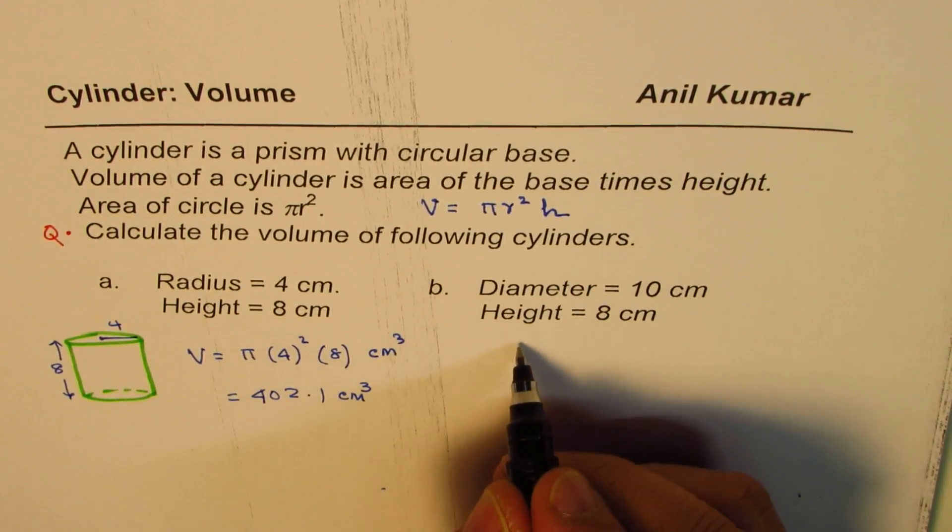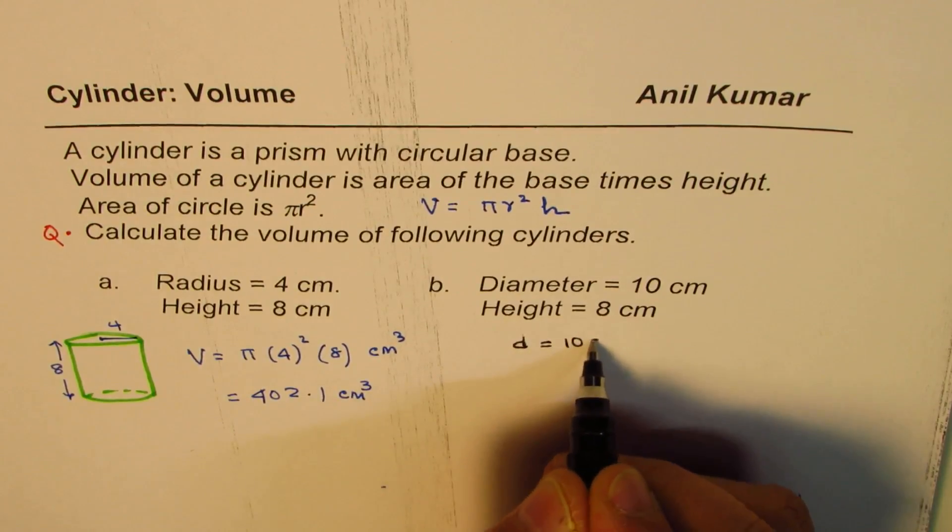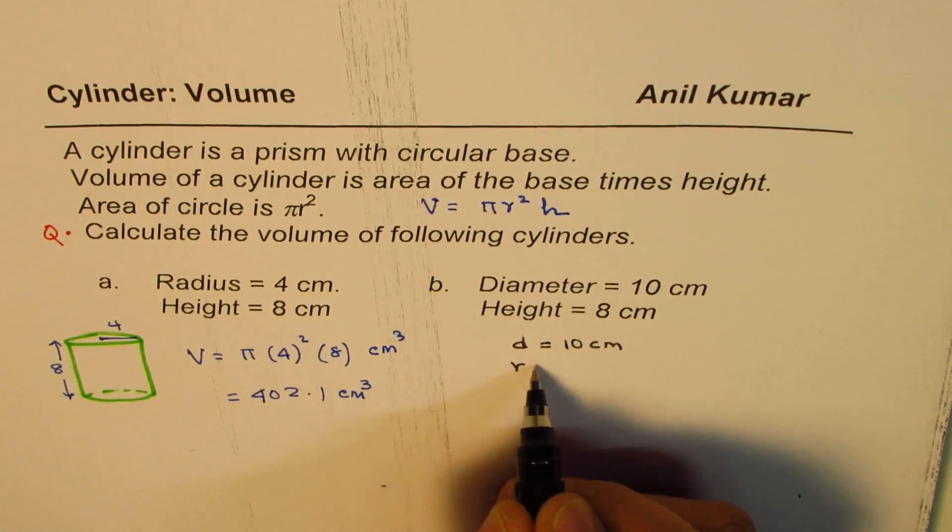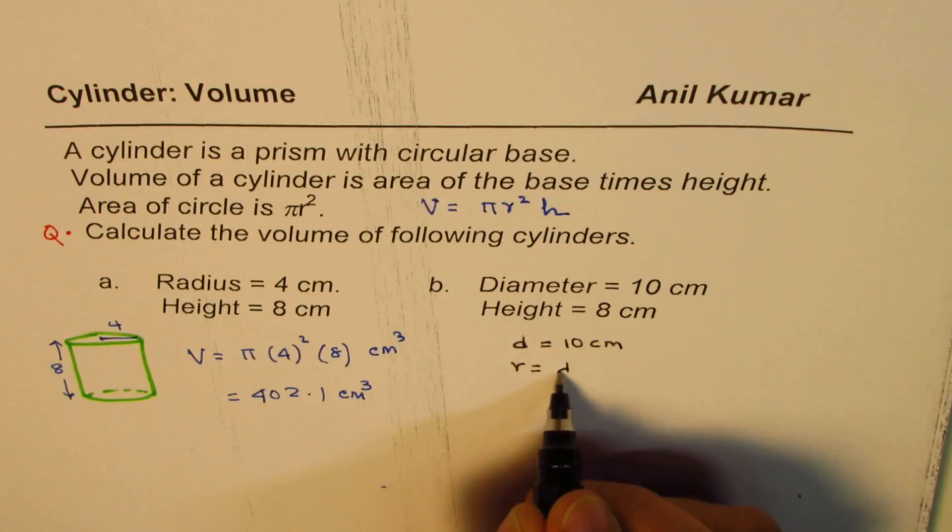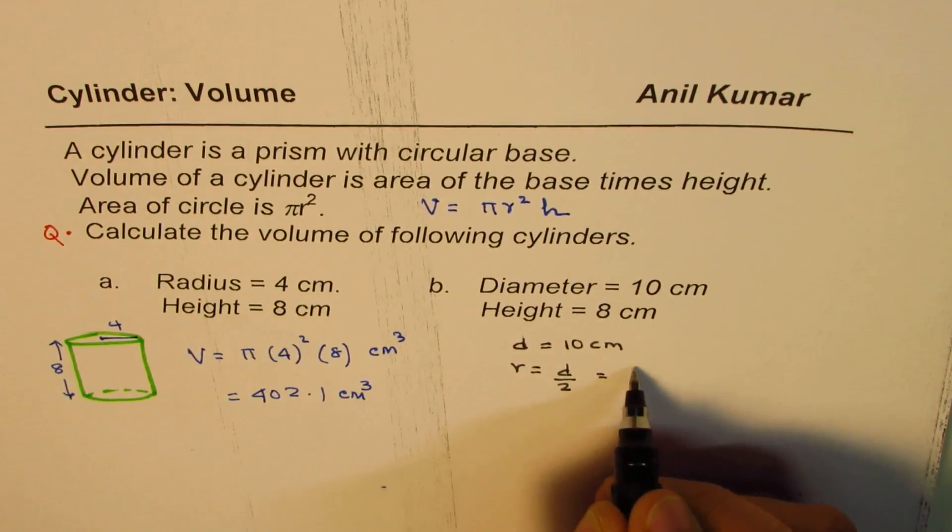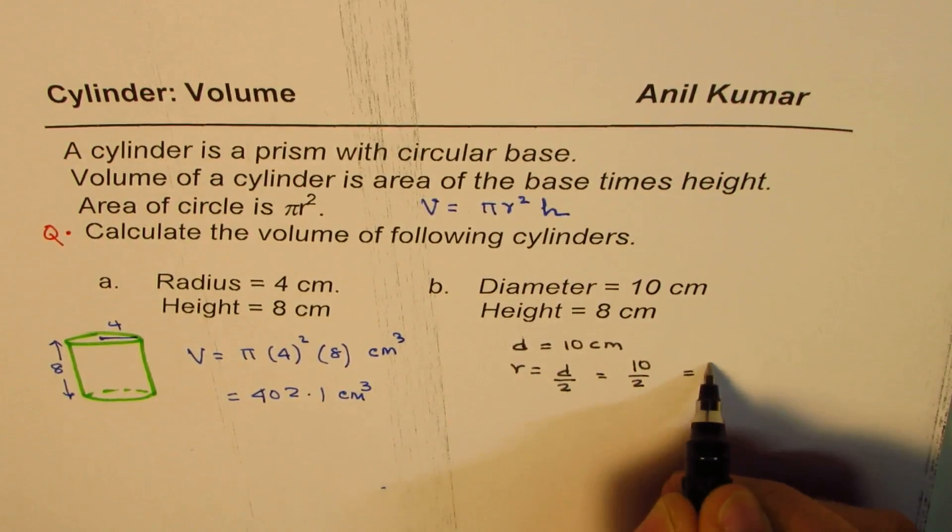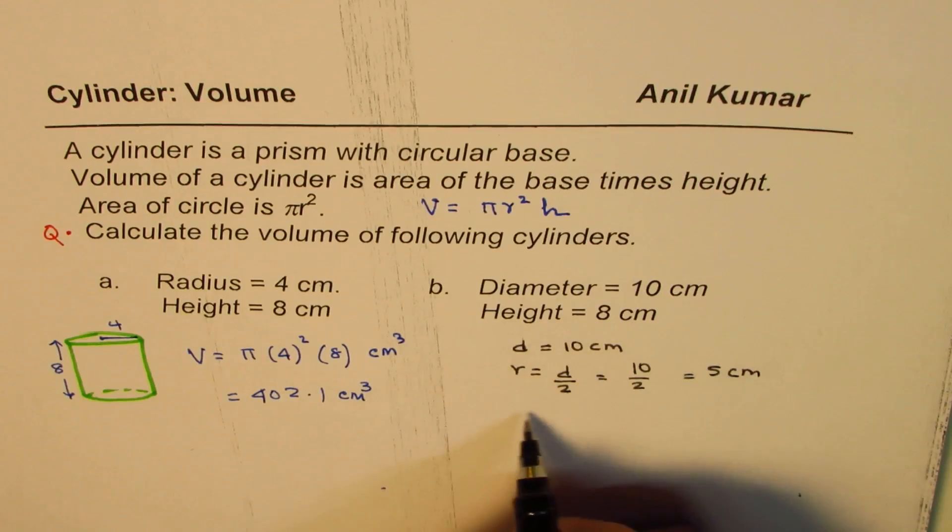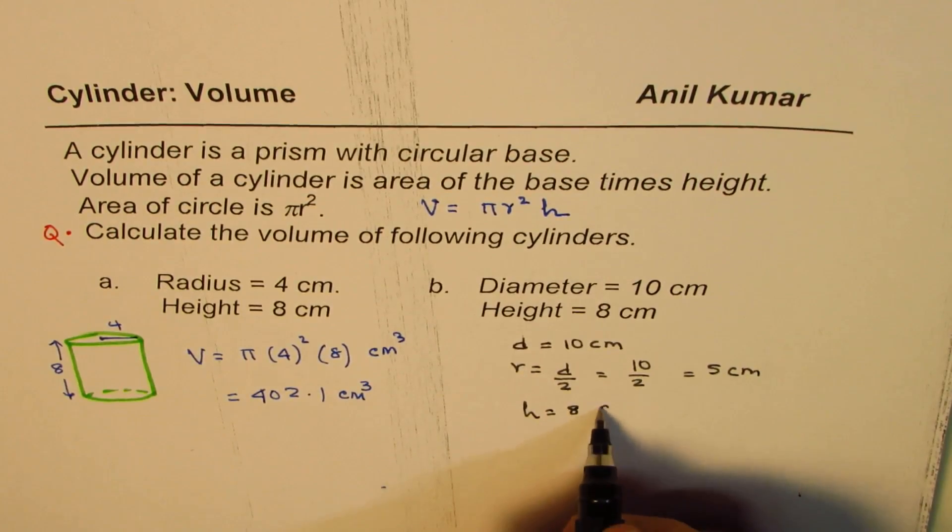Now here, we are given the diameter this time. Diameter is 10 centimeter. Then radius will be diameter divided by 2. So it will be 10 divided by 2, which is 5 centimeters. And we are given height of 8 centimeters.